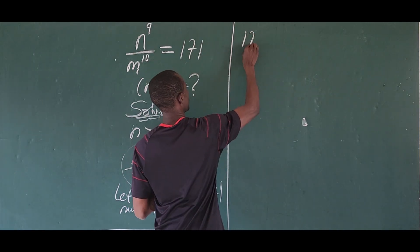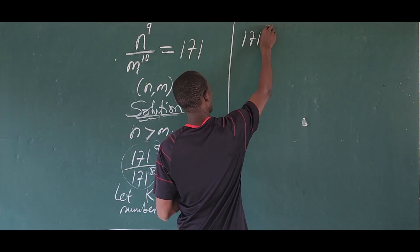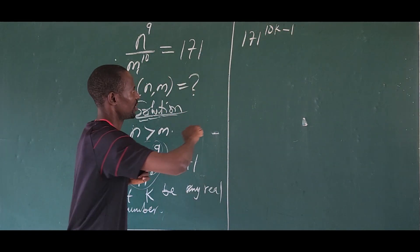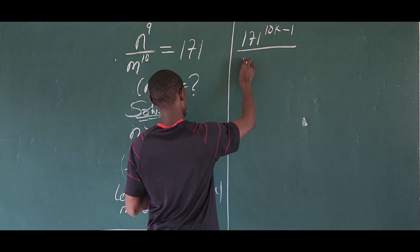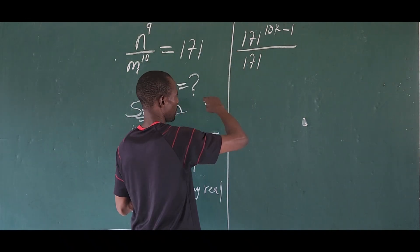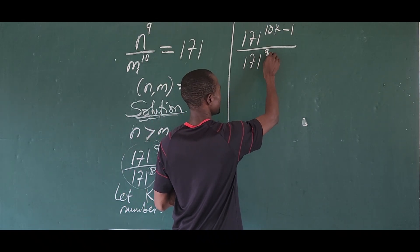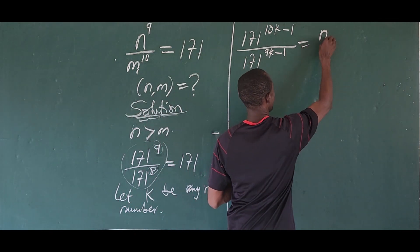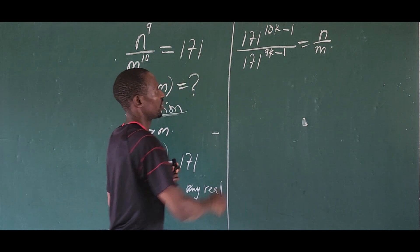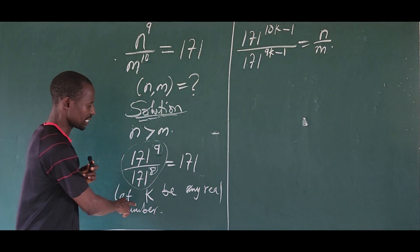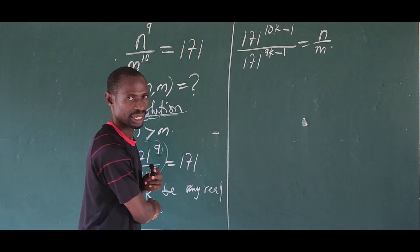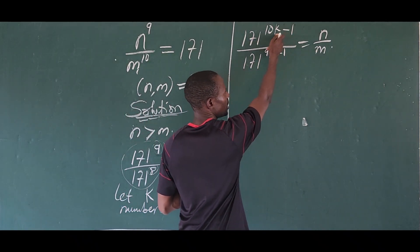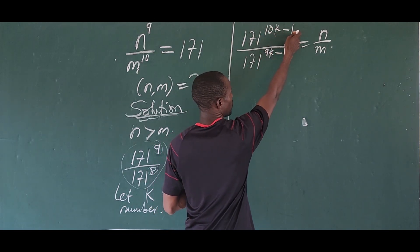So we can now express the numerator as 171 to the power of 10K minus 1, all over 171 to the power of 9K minus 1, and let this equal n over m. Now, if K is an integer and we put in 0, we get minus 1 in both exponents, which does not work for natural numbers.